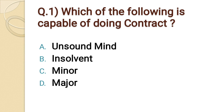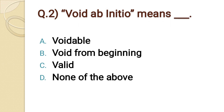Question number one: Which of the following is capable of doing a contract? Option A: unsound mind. Option B: insolvent. Option C: minor. Option D: major. The correct option is option D: major.